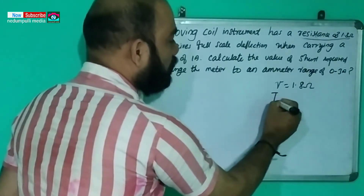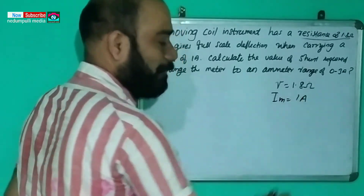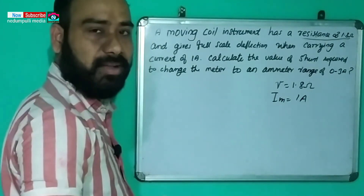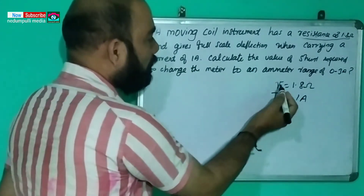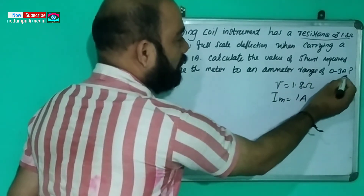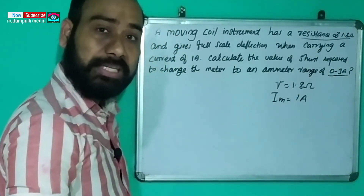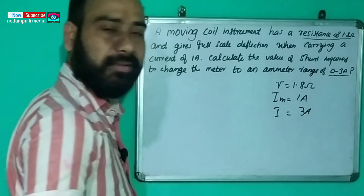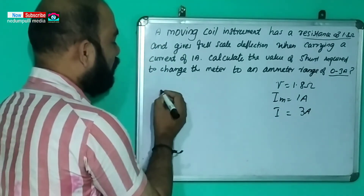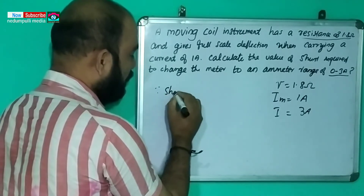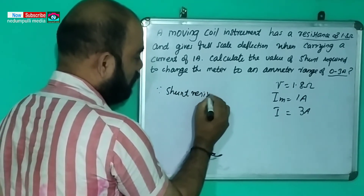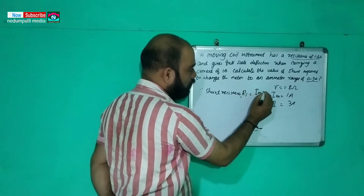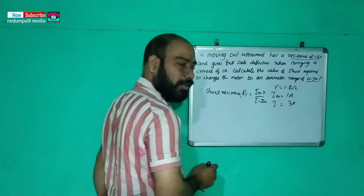So the maximum deflecting current Im is equal to 1A. We need to calculate the value of shunt resistance. The total current I is equal to 3A. Now we have the equation: shunt resistance Rs is equal to Im into R divided by I minus Im.